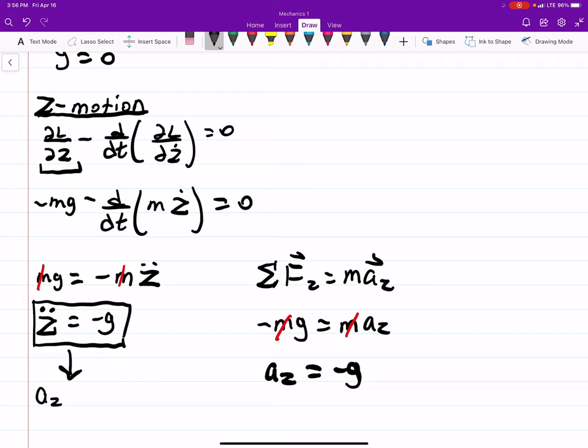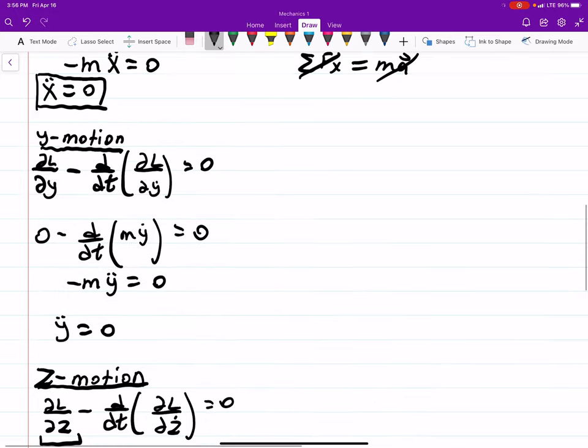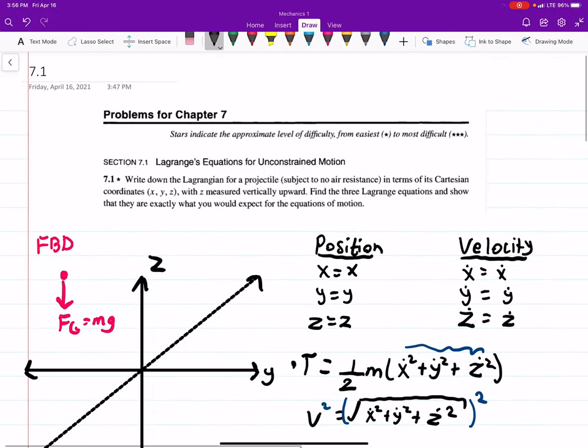And that's all this is. This is acceleration in the Z-direction is equal to minus G. So we get the same answer as we would have expected using Newtonian mechanics as we do with Lagrangian mechanics. So that's a good practice problem there.